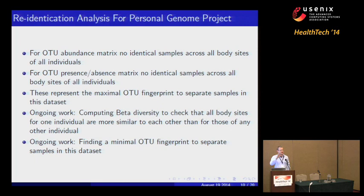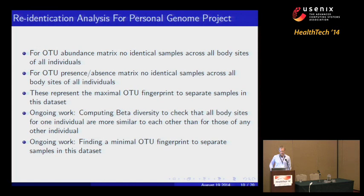Ongoing work I'll be performing includes: first, checking whether this maximal OTU fingerprint exists in other datasets; second, computing beta diversity to verify that all samples for one individual are more similar to that individual than to any other; and finally, finding a minimal OTU fingerprint sufficient to separate samples in this dataset.